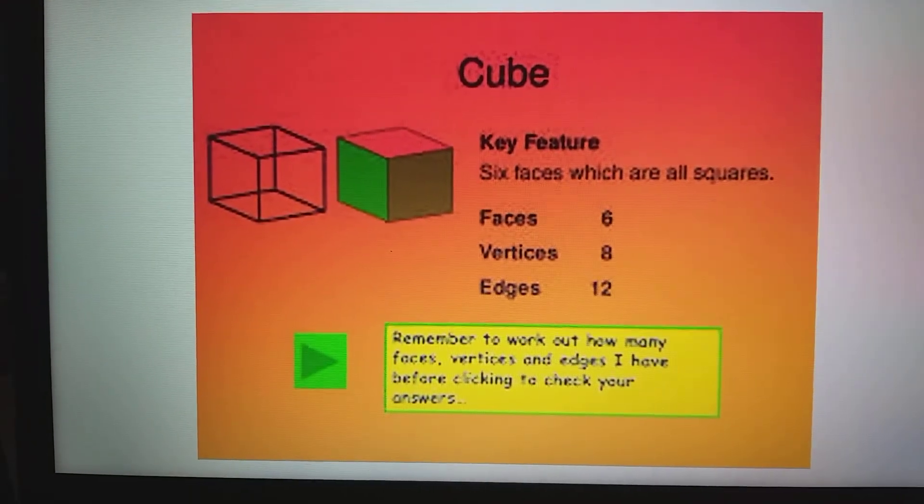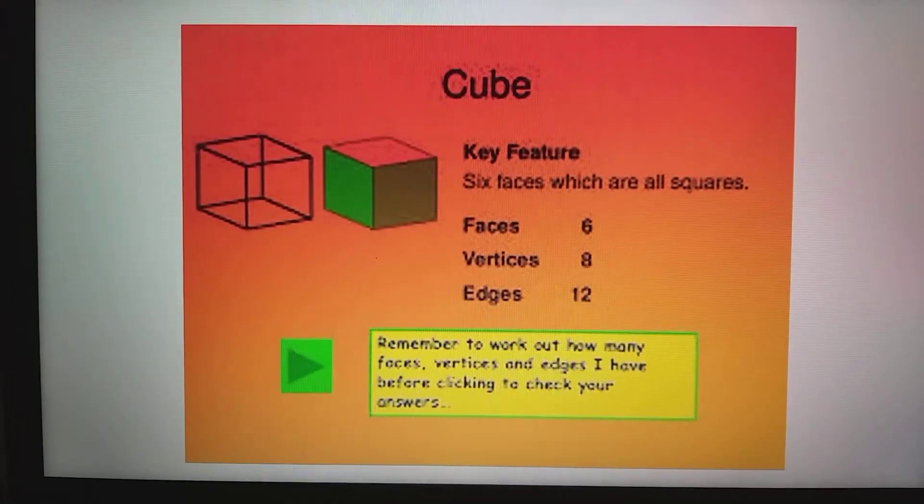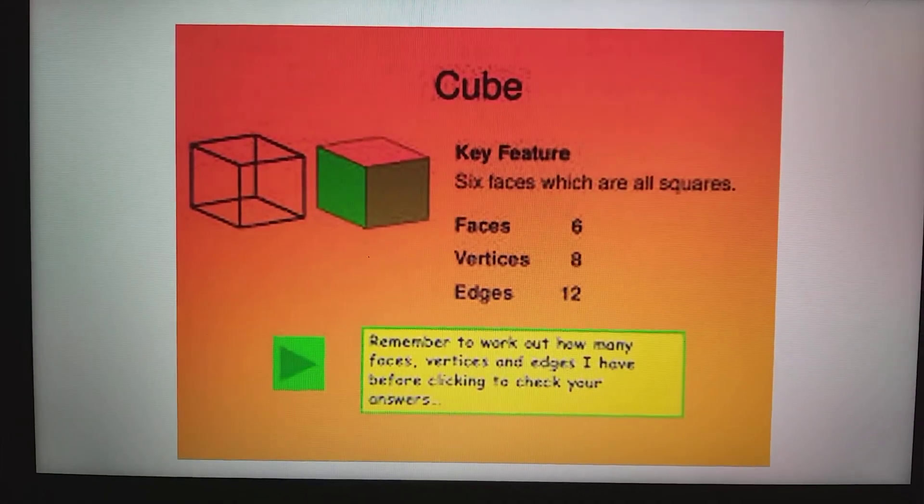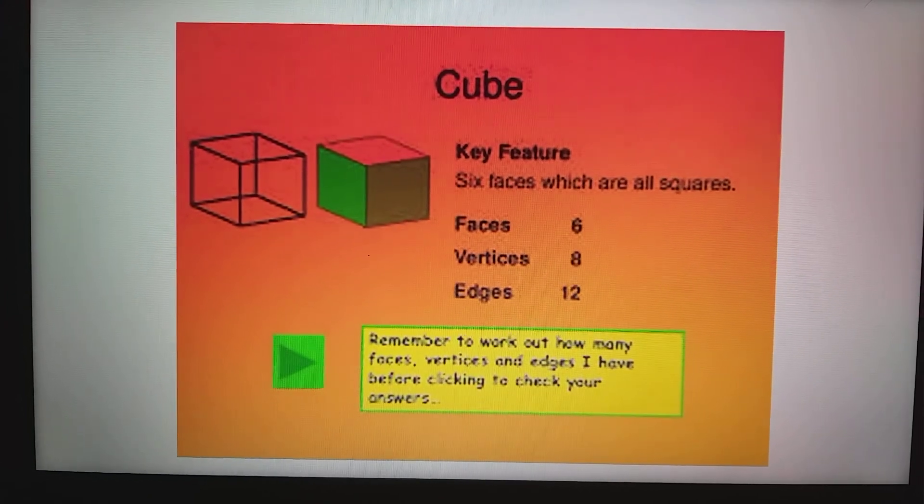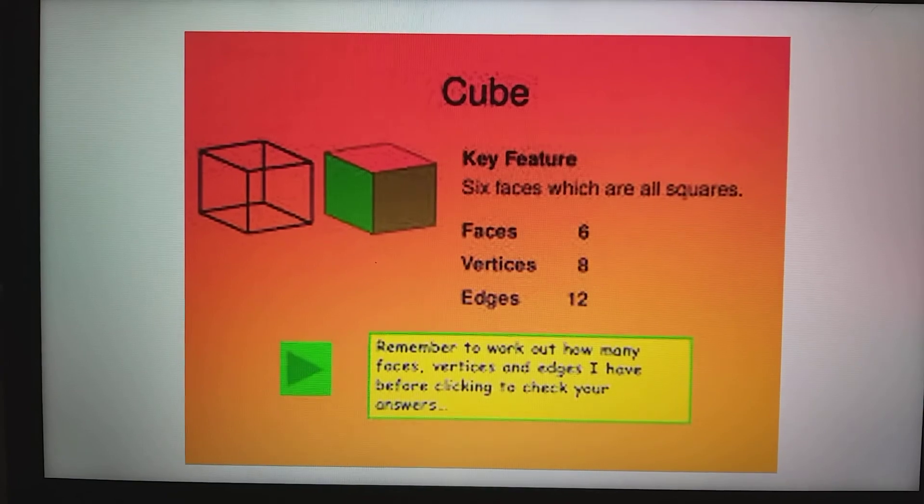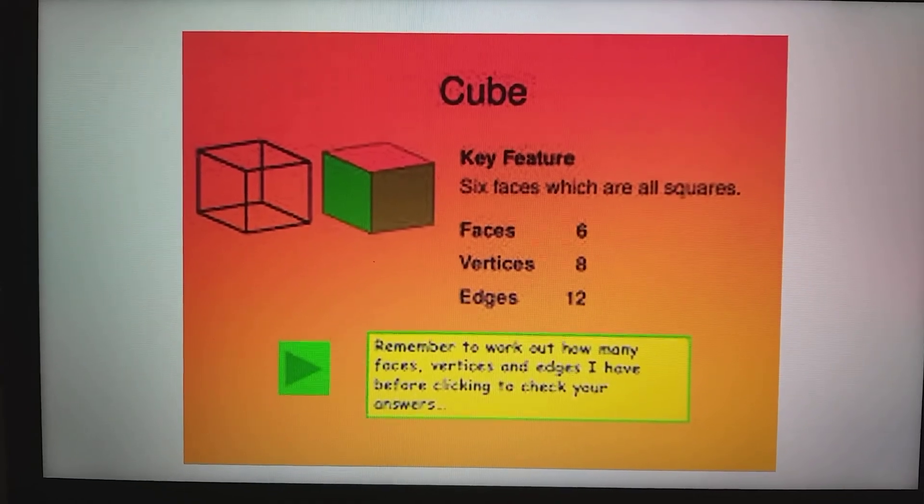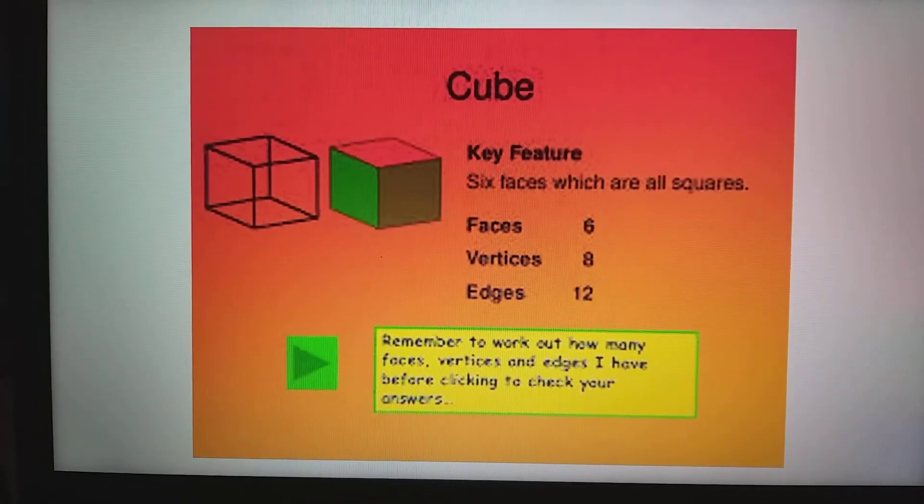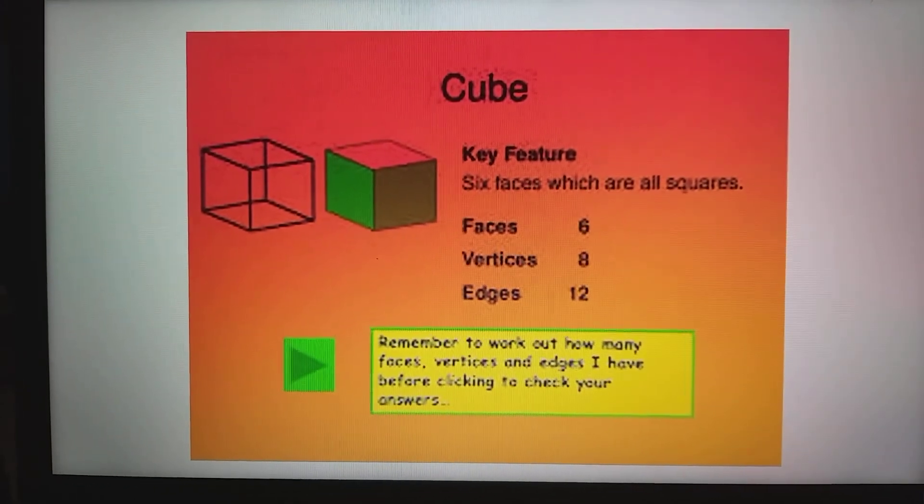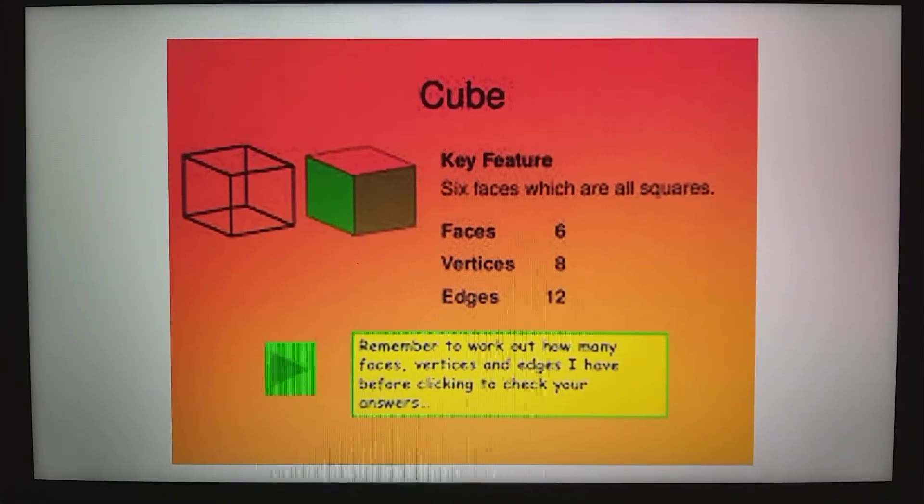Now what type of item can you find that looks like this in your home? Maybe a watch box or a cardboard box, or you play snake and ladder and you use a dice. Those dice that you use to roll have the shape of a cube.